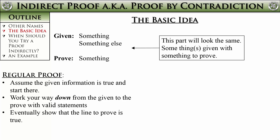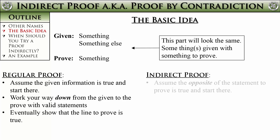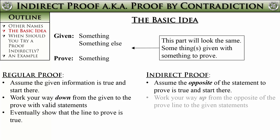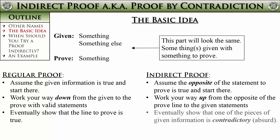With an indirect proof, instead of trying to show that the proof statement is true, we need to show that the proof statement cannot be false. To do that, we start off by assuming that the opposite of the statement to prove is true, and use that as our starting point. We kind of work the other direction — instead of starting with the given and working towards the prove, we start with the opposite of the prove and work our way up to the given. We eventually need to show something in the given is contradictory, or in the Latin way, absurd.